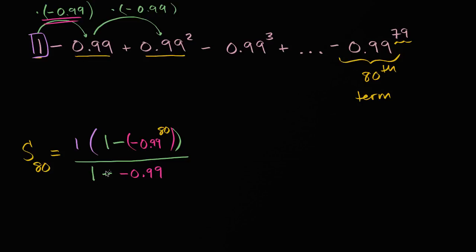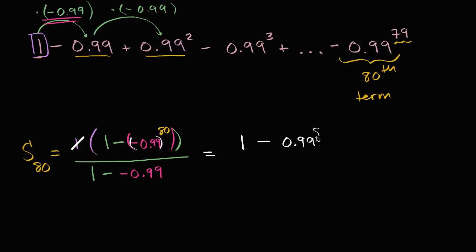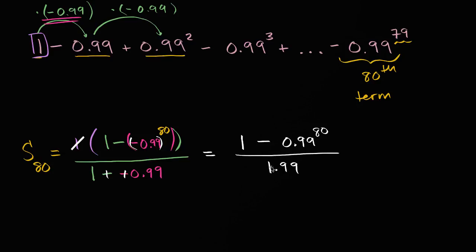We can simplify this a little bit. Negative 0.99 to the 80th power — I put parentheses there to make sure we are taking the whole negative 0.99 to the 80th power. Since we're raising it to an even power, it's going to be positive, so that's the same as 0.99 to the 80th power. And subtracting a negative is just adding the positive, so the denominator becomes 1.99. If we had a calculator, we could find this exact value, though most calculators won't give an exact value for something to the 80th power.